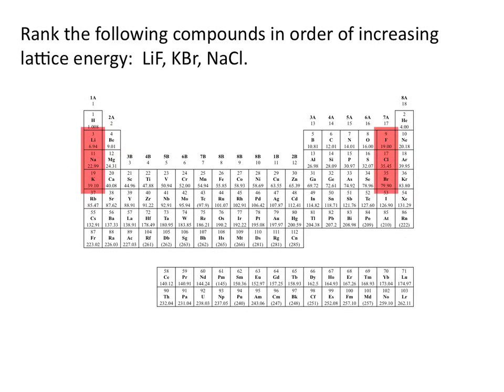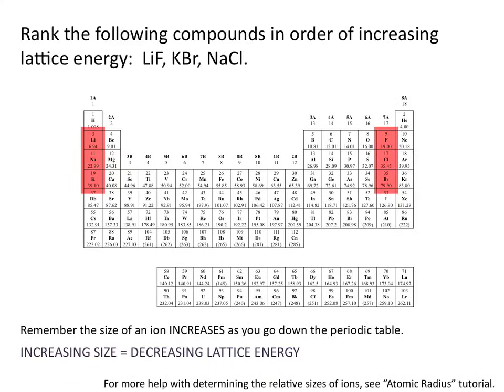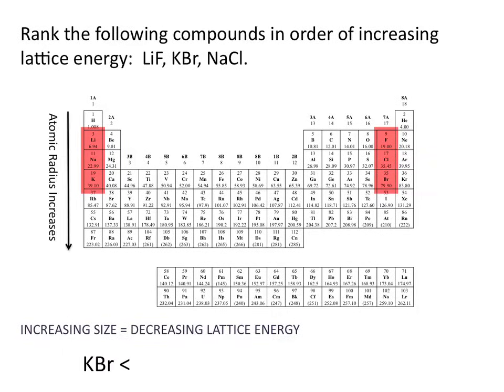In this example, the charges of our ions remain constant. So the difference in lattice energies is going to be due to the distance between the ions forming the compounds. That distance gets bigger as the size of the ions increases — and remember that ion size increases as you go down the periodic table. Since increasing size corresponds to a decrease in lattice energy, KBr will have the lowest lattice energy, followed by NaCl, and LiF will have the greatest lattice energy.